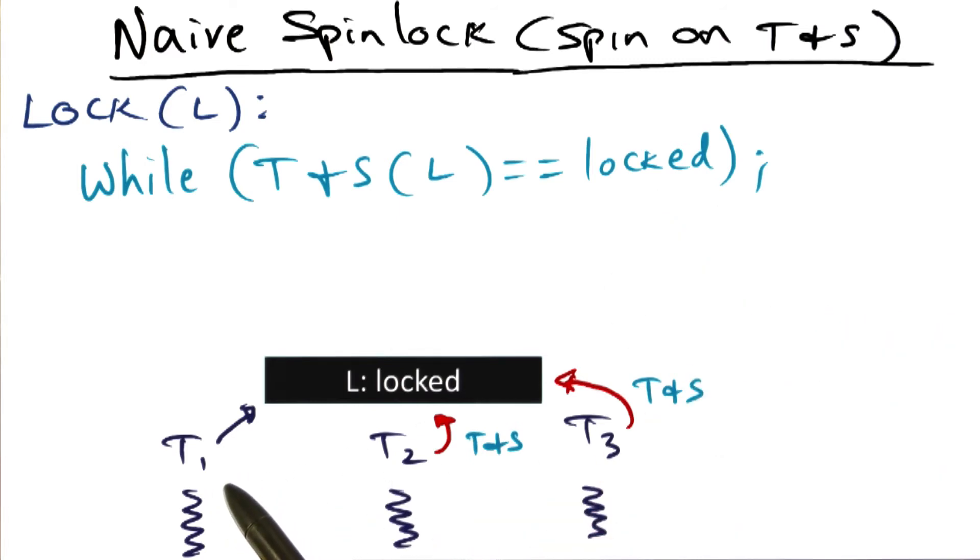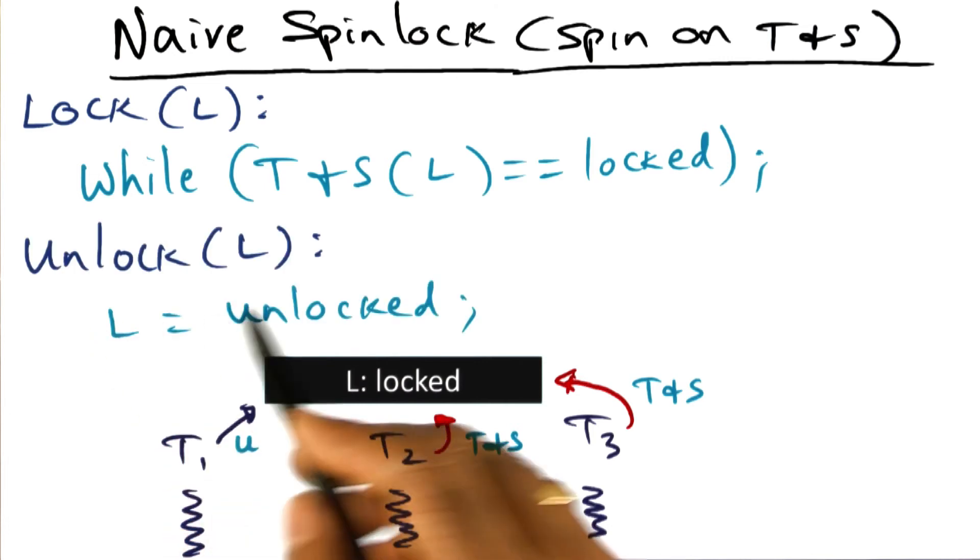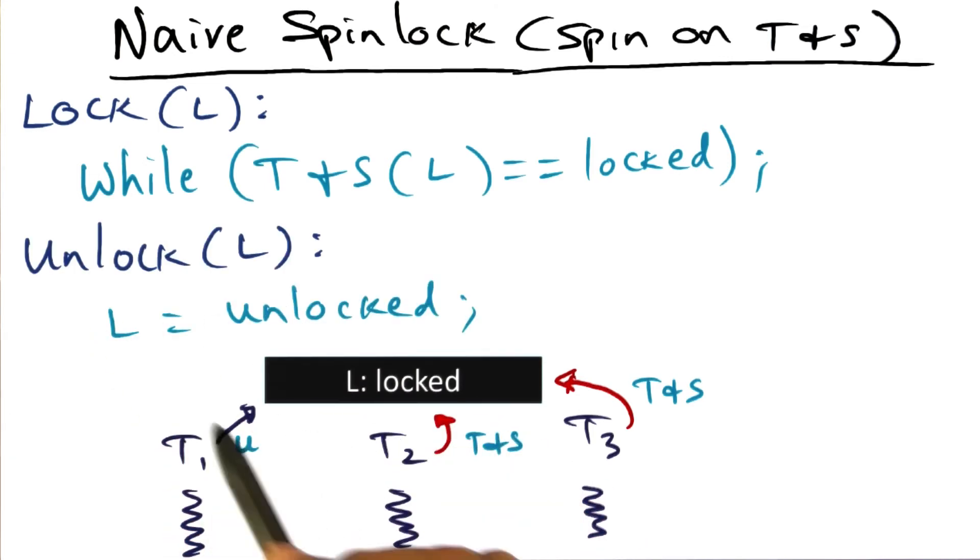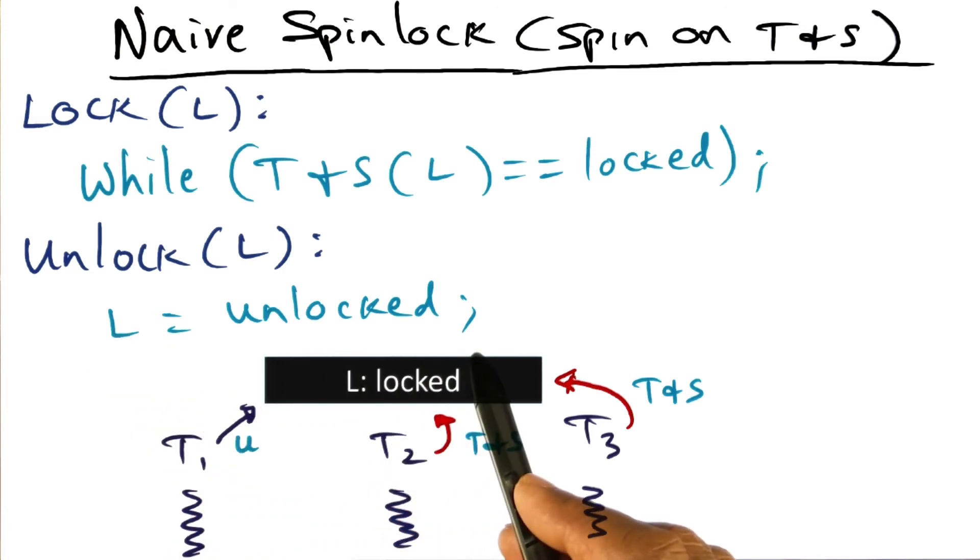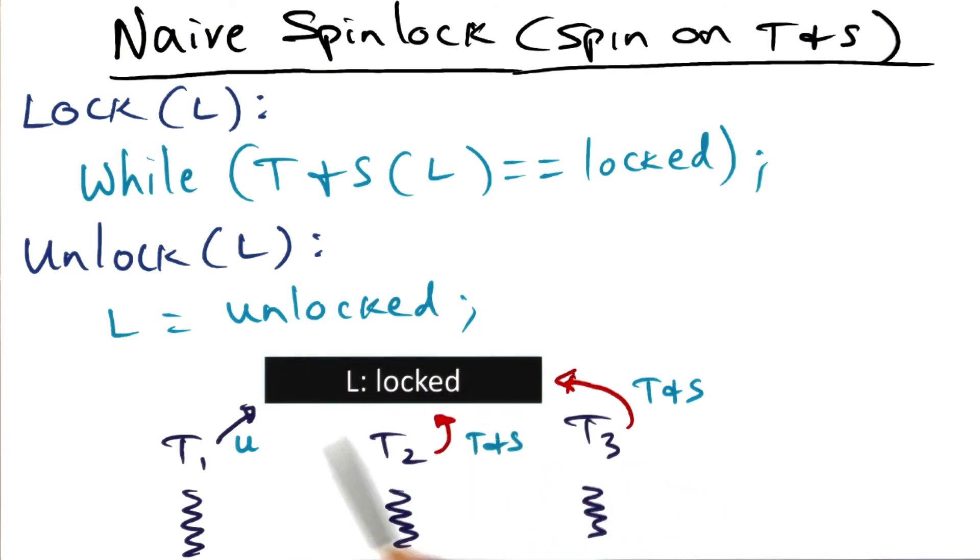And the way to do that is very simple. So he comes along and calls an unlock function. What the unlock function does is it basically goes in and clears this lock, meaning it resets this lock to the unlocked state. Once it does that, then this lock becomes available. So it becomes unlocked and at this point, T2 and T3, who are stuck here...